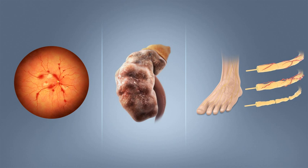People, usually with type 1 diabetes, may also experience episodes of diabetic ketoacidosis (DKA), a metabolic disturbance characterized by nausea, vomiting and abdominal pain, the smell of acetone on the breath, deep breathing known as Kussmaul breathing, and in severe cases a decreased level of consciousness. A rare but equally severe possibility is hyperosmolar hyperglycemic state (HHS), which is more common in type 2 diabetes and is mainly the result of dehydration.